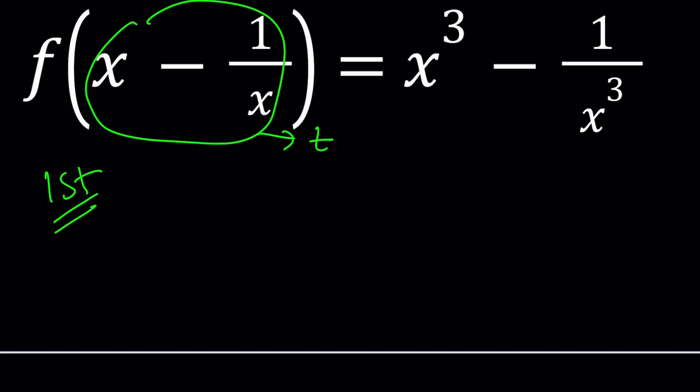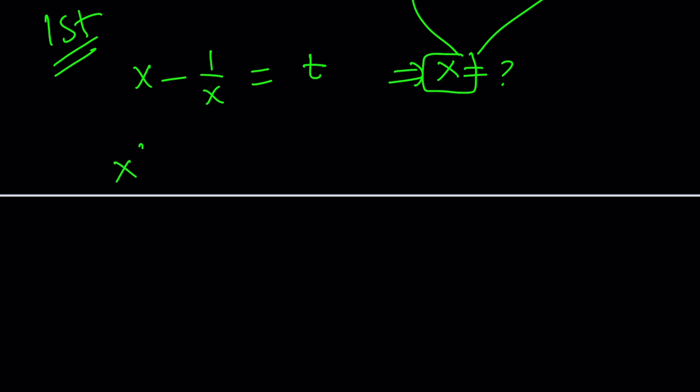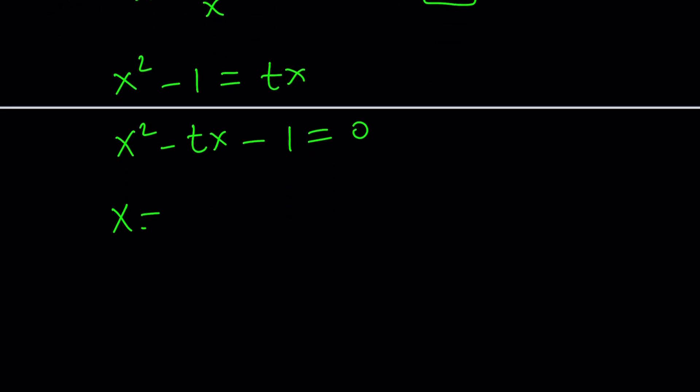So let's go ahead and start by replacing x minus 1 over x with t. Our next step would be to solve for x in terms of t so that we can substitute it here and here. That's going to be our next goal. Let's go ahead and try to solve for x. Multiply everything by x first. That should give you a quadratic equation when you move everything to the left hand side. Let's go ahead and solve it using the quadratic formula because we have a formula.